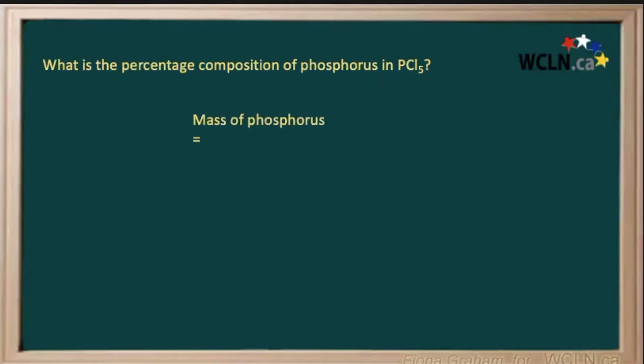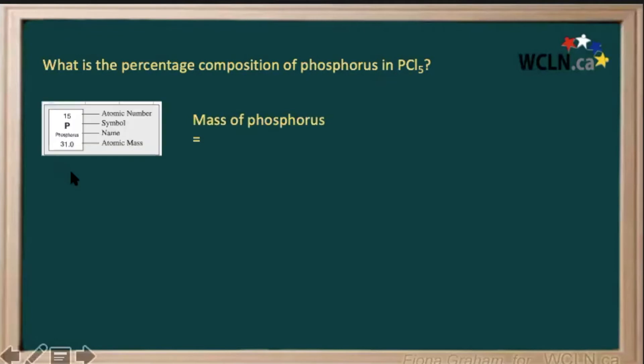As we can see from our formula and the periodic table, the atomic mass of phosphorus is 31, and we only have one of them. So 1 times 31 gives us 31 atomic mass units of just the phosphorus.